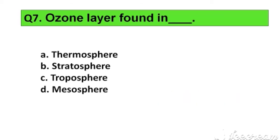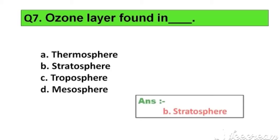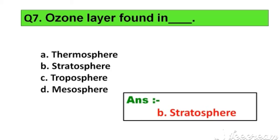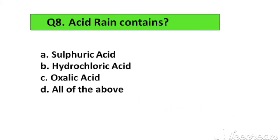Question number 7. Ozone layer is found in: Option A. Thermosphere, B. Stratosphere, C. Troposphere, D. Mesosphere. The right answer is Option B. Stratosphere.